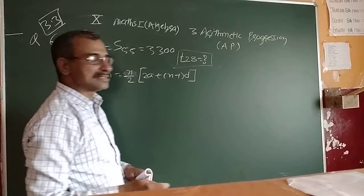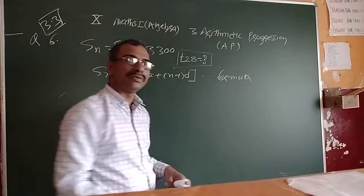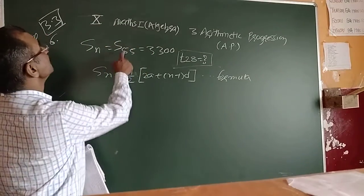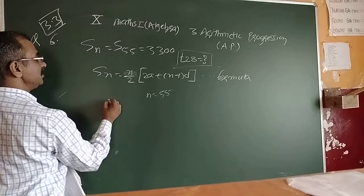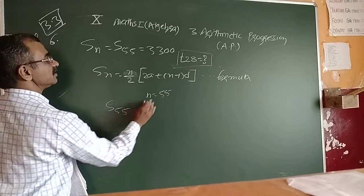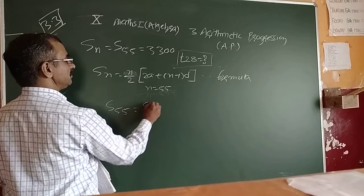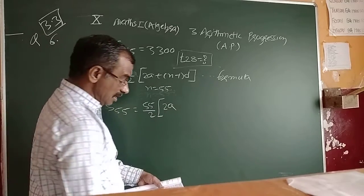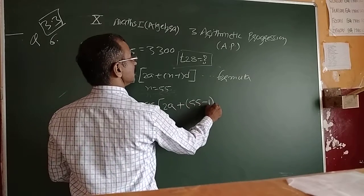By using the formula: SN = N/2 into (2A + (N-1)D). This is our formula to calculate the value of SN. By putting the values here, N is 55. So S55 = 55/2 into (2A + (55-1)D). We do not know the value of A or D.